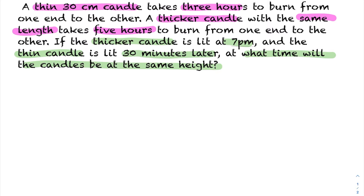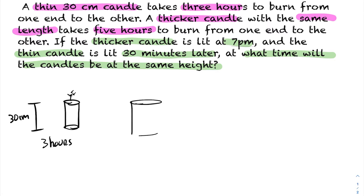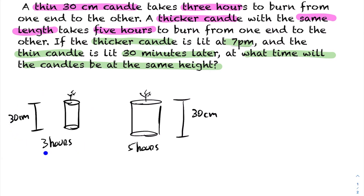We have a thin candle — 30 centimeters in length — and we know this thin candle takes three hours to burn to the end. We also have a thicker candle of the exact same length, however it takes five hours to burn to the bottom. The thicker candle is lit at 7 PM and runs for 30 minutes on its own, then the thinner candle is lit.